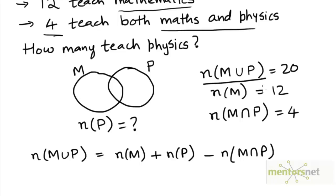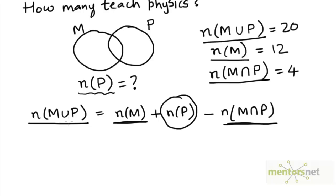We are given n(M union P). We are given n(M) and we are given n(M intersection P). And we are asked to calculate n(P). So this is what we have to calculate. And all of the values are given. So it's just a simple matter of doing basic arithmetic. Just substitute for the values of these three variables and calculate what n(P) is.